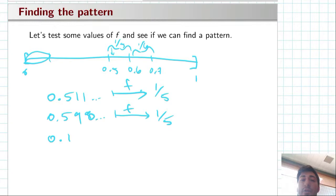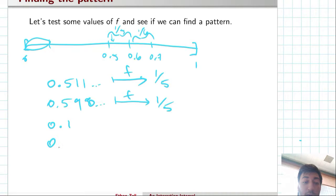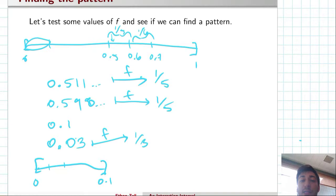For everything that starts out with a 0.1 or 0.2, we kind of know immediately what f is doing. But if we go back to the very beginning of the interval, it starts to get a little more confusing. If we look at any number between 0 and 0.1, then we have 0.0 and then some other numbers, and f takes it to one third. So what we can do is split up zero to 0.1 another ten times and repeat the process.